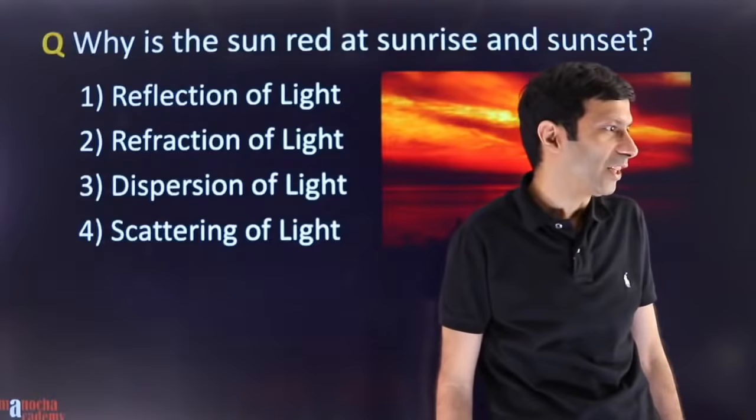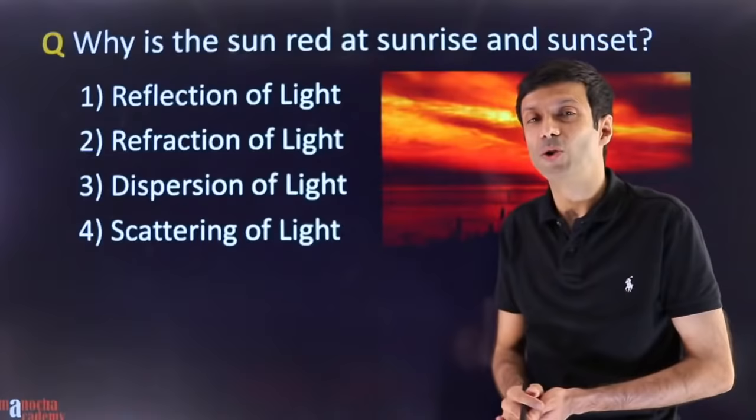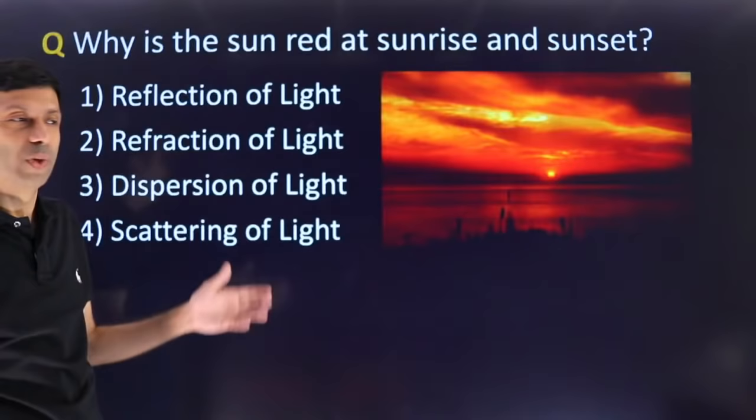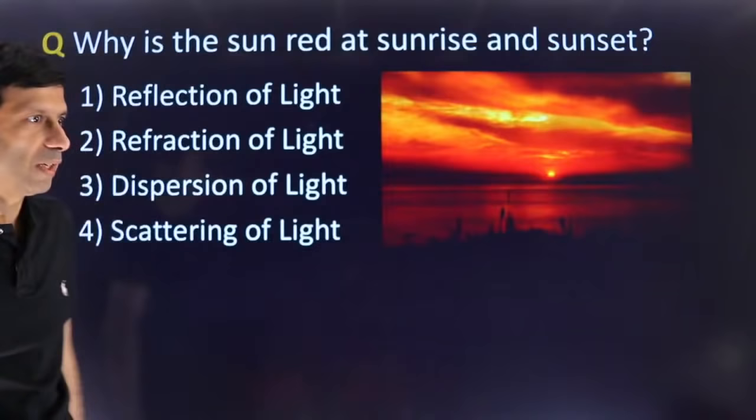Next question: why is the sun red at sunrise and sunset? Is it due to reflection, refraction, dispersion, or scattering? Let's understand the concept. When you are looking at the sun at sunrise or sunset, you can see a beautiful red color. What phenomena is responsible?